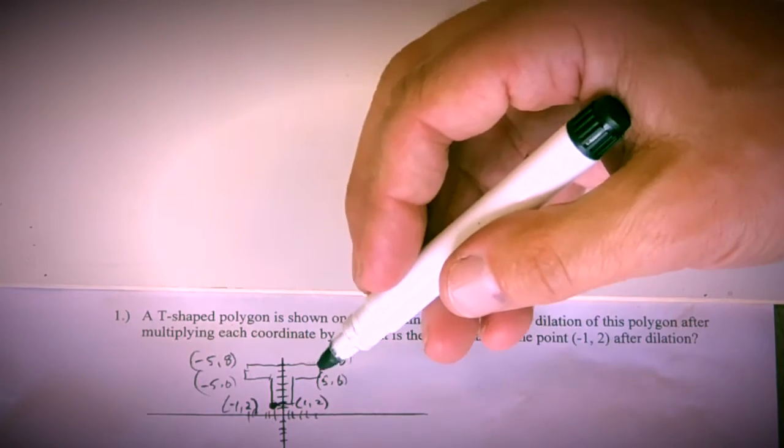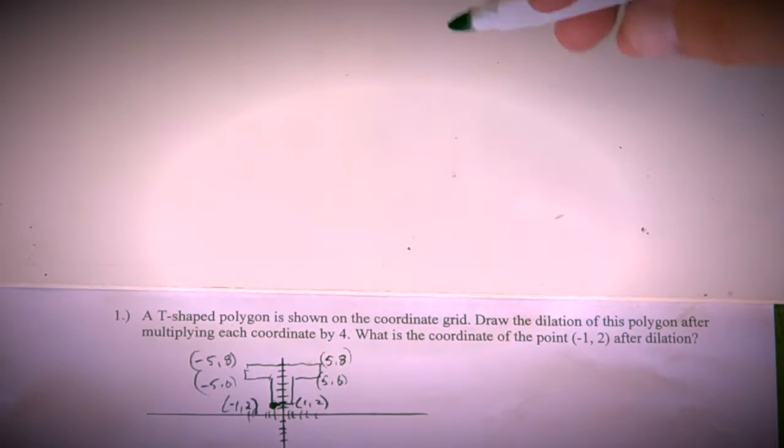This is obviously going to get bigger because you're multiplying it. I'm not going to redraw this whole thing. I just want to go over how to get the coordinate point. What is the coordinate of the point (-1, 2) after the dilation? So let's just do that.